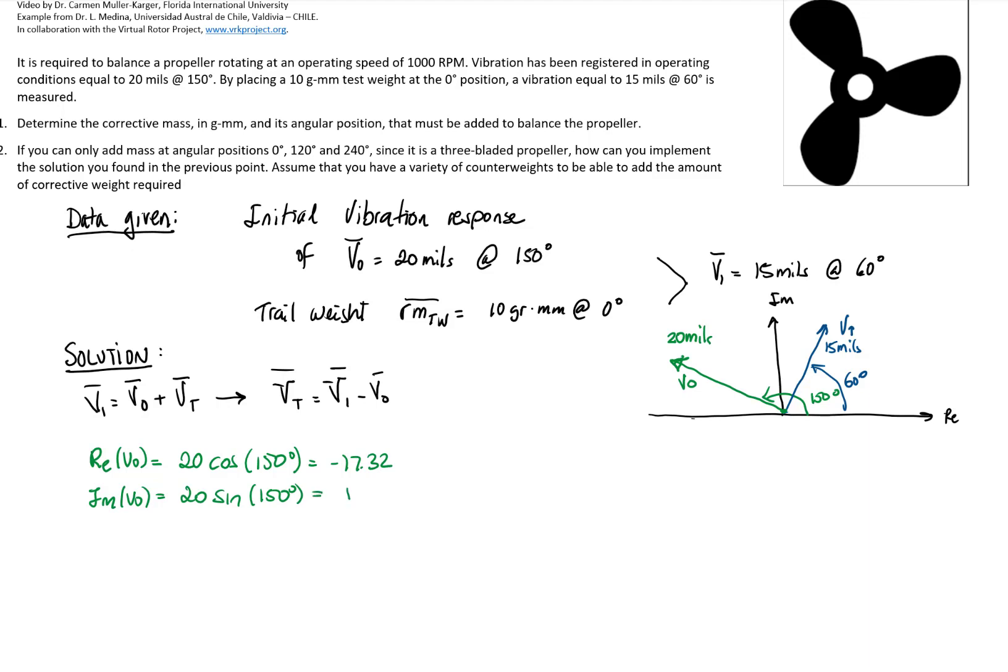Then I have the real part of the second run, which is 15 cosine of 60, which is 7.50.